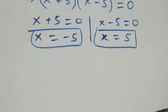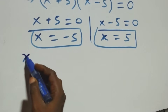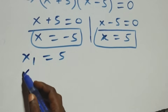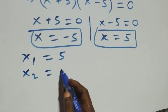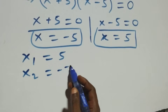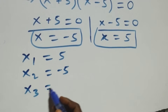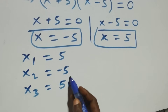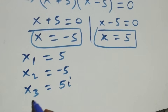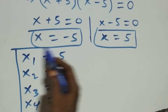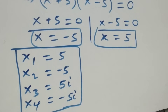Writing them out: the first solution x₁ equals five, the second solution x₂ equals minus five, x₃ equals 5i, and x₄ equals minus 5i. That is four solutions altogether, two real and two complex.